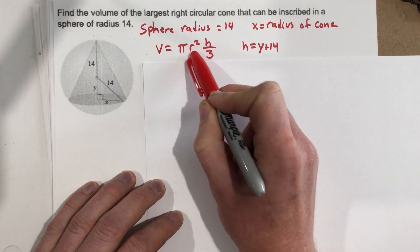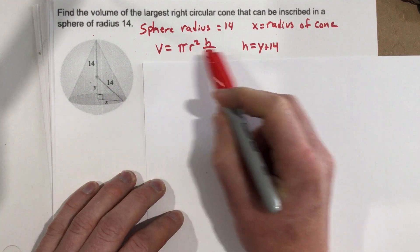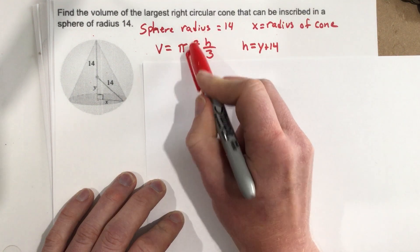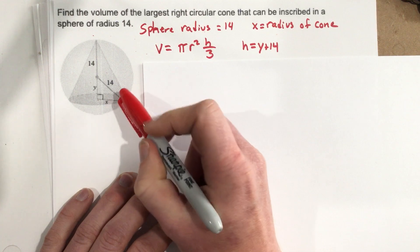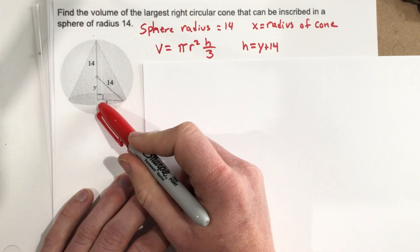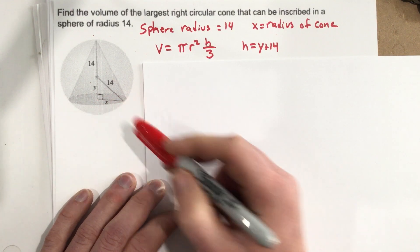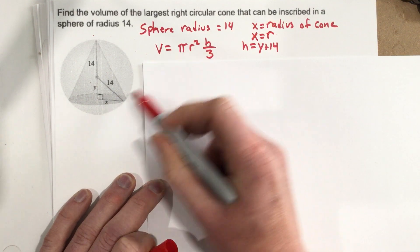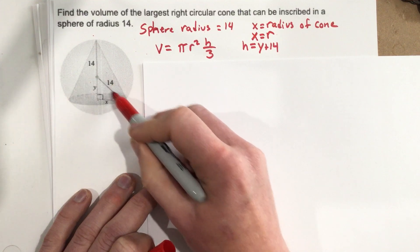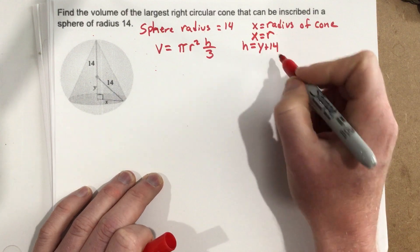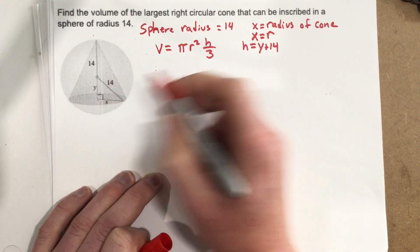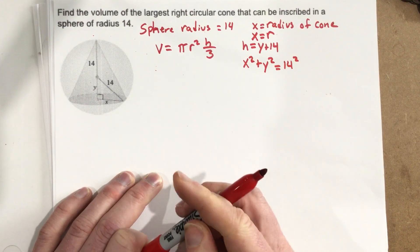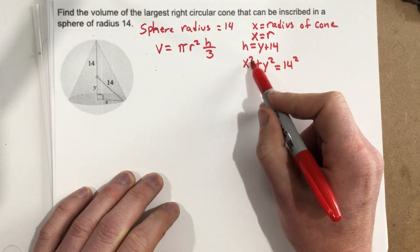That means I need to find a way to get r in terms of y. The important thing to understand is r is not the radius of the sphere — that could be a big misconception. R is the radius of the circle on the cone, which equals X. We have a right triangle here with 14 as our hypotenuse, so by the Pythagorean theorem: x² + y² = 14², which means r² + y² = 196.